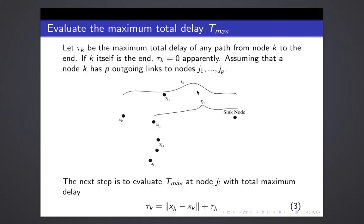Let t_k be the maximum total delay of any path from node k to the end. It is very clear that if k itself is the end, then t_k is zero apparently.